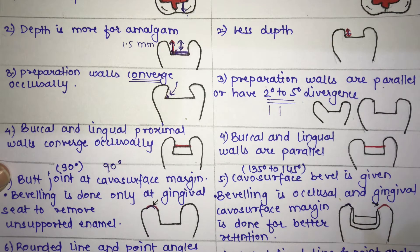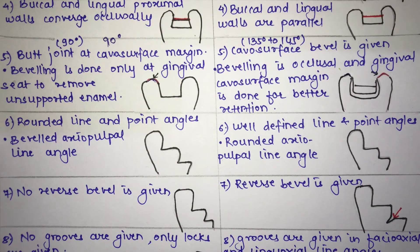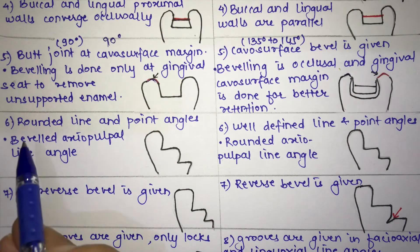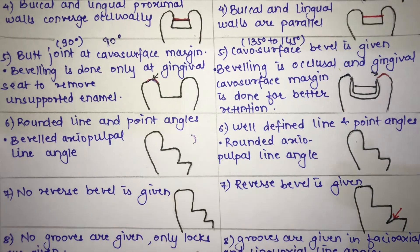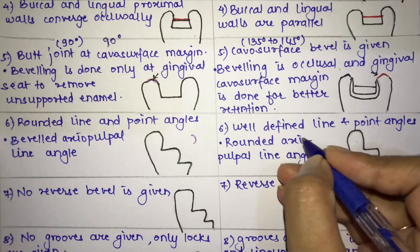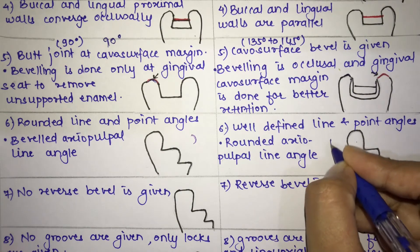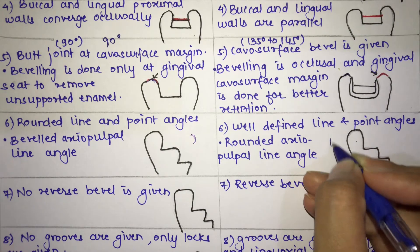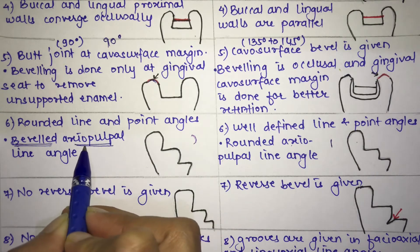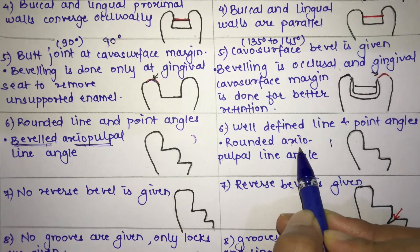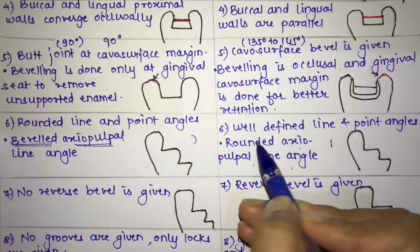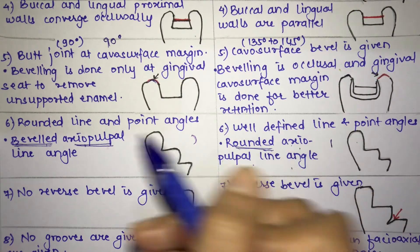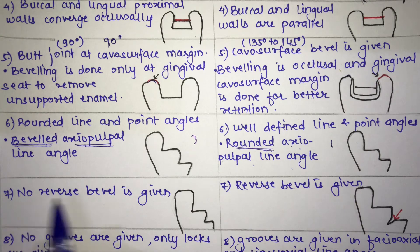The next difference is that in amalgam, the line and point angles are rounded, whereas in cast restoration the line and point angles are well-defined and not rounded off. Additionally, in amalgam, the axial pulpal line angle is beveled, whereas in cast restoration the axial pulpal line angle is rounded off.